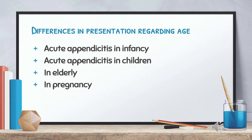In pregnancy, the incidence is one in 2000 pregnancies. It is more common in the first and second trimester. The appendix shifts to the upper abdomen, so pain is higher and more lateral; rebound tenderness and guarding may not be evident. TLC will be very high with neutrophilia, the risk of premature labor is high, and the incidence of perforation is highest in the third trimester. Surgery is the treatment.